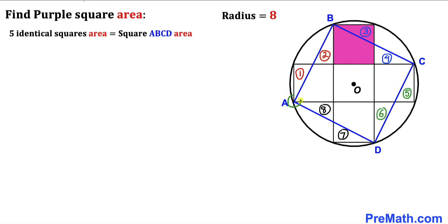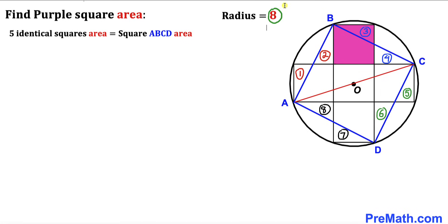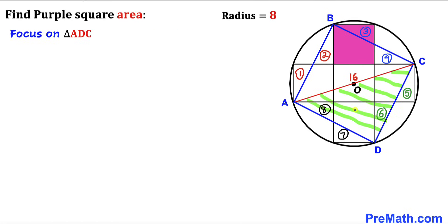Now let's connect point A with point C. As you can see, this line AC passes through center O of the circle. We can see that AO is the radius and OC is the radius as well, and we know the radius is 8. So AC is the diameter of this circle, which is 16 units. Furthermore, AC is also the diagonal of square ABCD. Let's now focus on triangle ADC and apply the Pythagorean theorem.